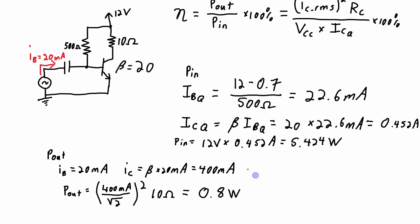Now I can take the input power and the output power and combine them together to calculate the efficiency. So I have 0.8 watts output power divided by 5.424 watts of input power. Multiply that by 100 percent to give me a percentage. And I calculate that my efficiency is 14.7 percent. Not very good.